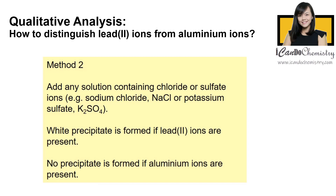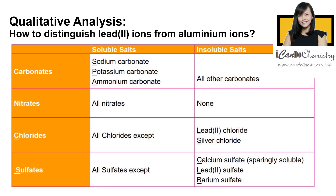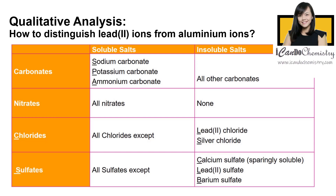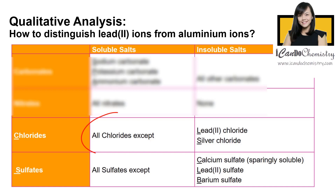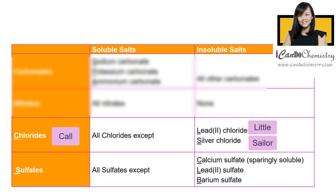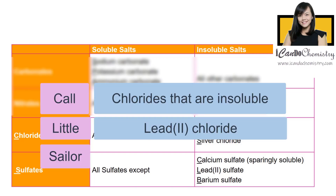Aluminium ions do not form a precipitate with chloride or sulfate ions because aluminium chloride and aluminium sulfate are both soluble in water. We learned the solubility rules when we dealt with salts in the earlier chapter. Referring to the solubility table: all chlorides are soluble except lead-2 chloride and silver chloride — remember it as CLx. Chlorides that are insoluble are lead-2 chloride and silver chloride.